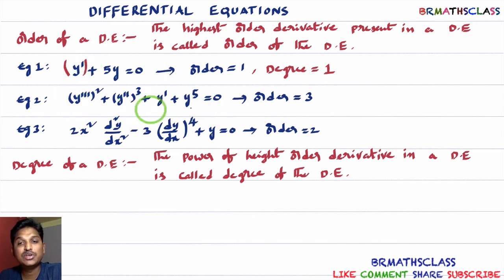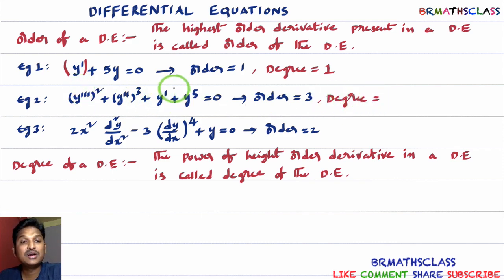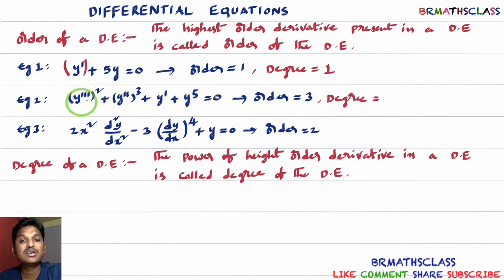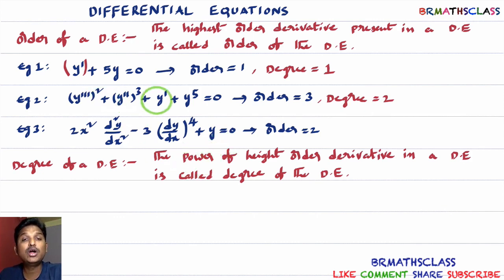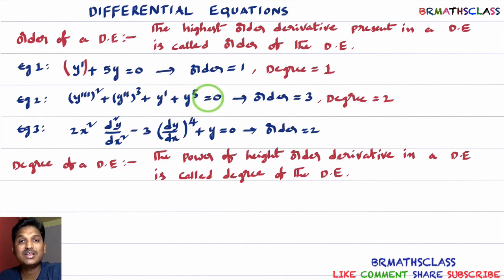Now see this differential equation. First order, second order, and third order derivatives are present. The third order derivative is the highest order derivative and its power is 2, so the degree of this differential equation is 2. Do not confuse with y power 5 — always check the power of the highest order derivative, which here is 2.